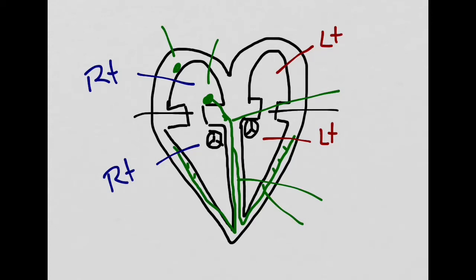This video will show the anatomy of the heart along with the EKG. The first chamber is the right atrium. This receives the deoxygenated blood from the inferior and superior vena cava.